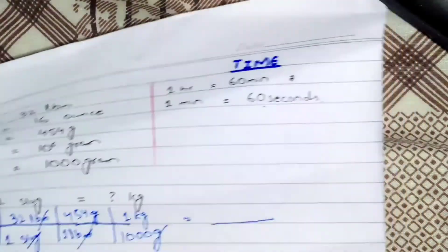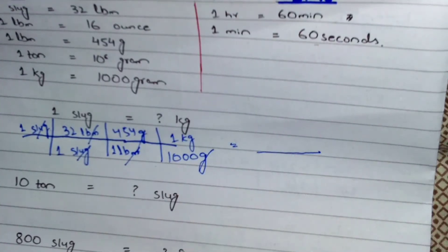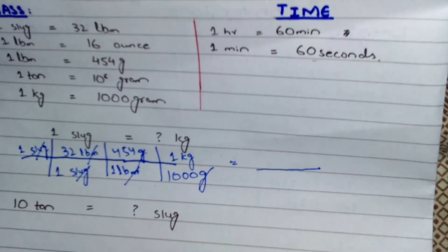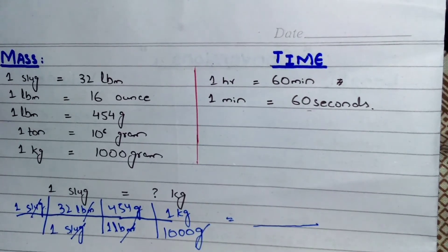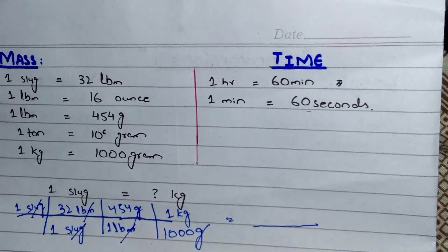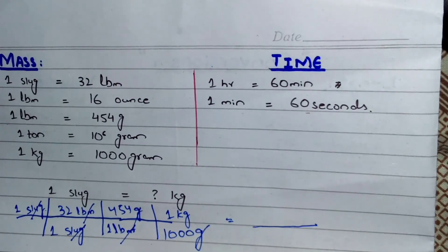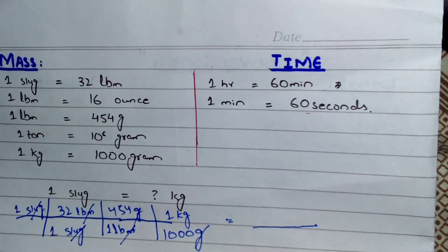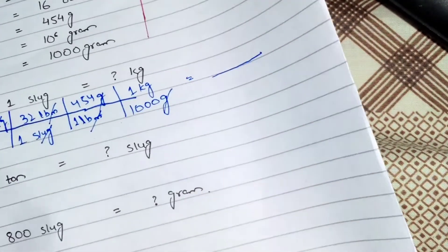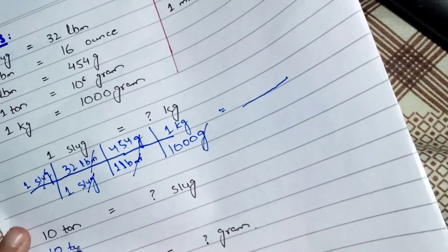Our second question is: how many slugs will be there in 10 ton? I don't know the direct conversion of ton to slug, but there is an alternate way. I know ton to gram conversion, then gram to lbm, and then lbm to slug. You can only learn this alternate way through practice — with practice, these steps will click automatically in your mind.